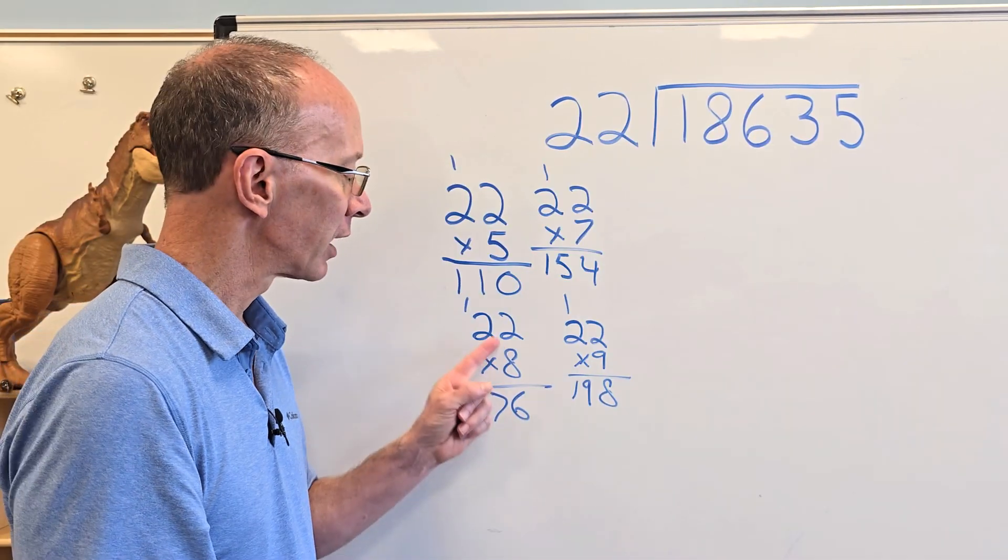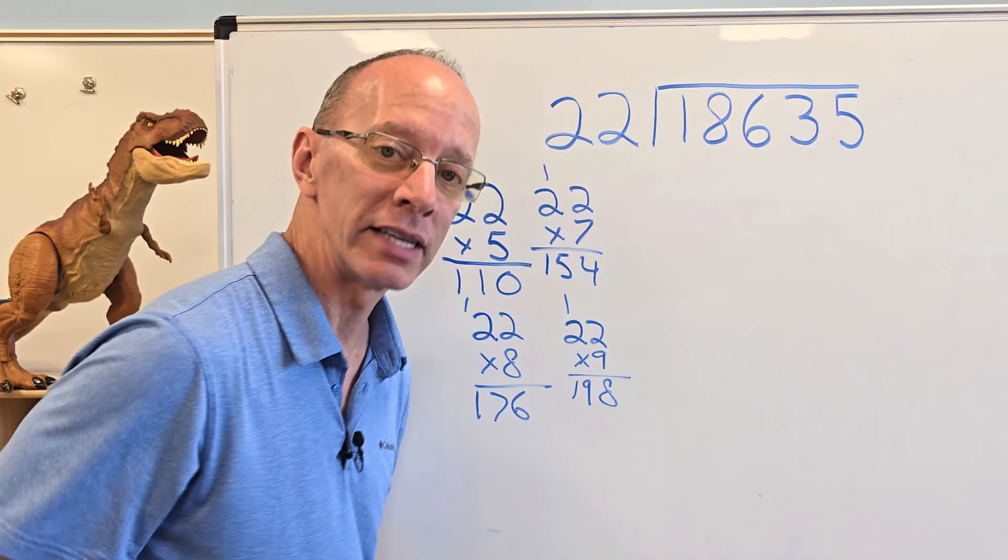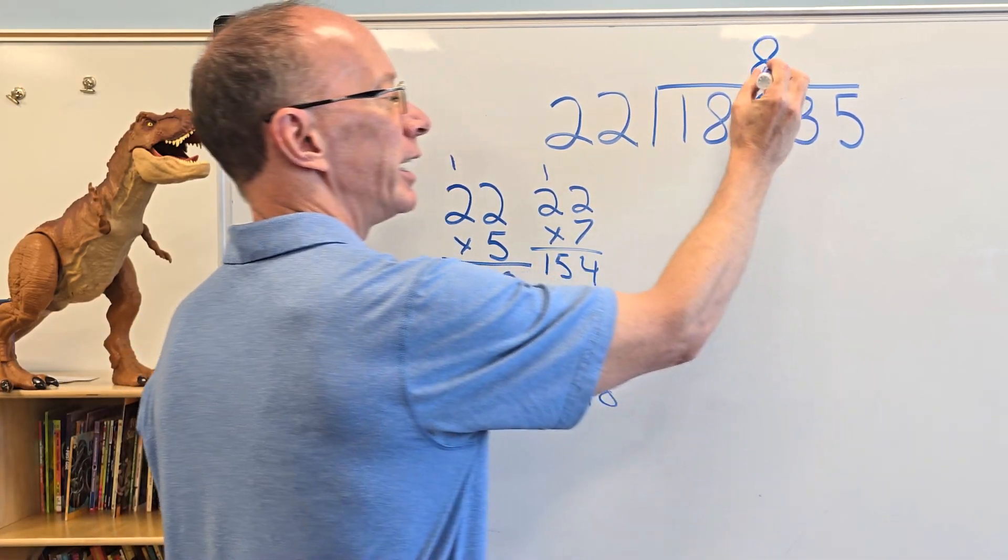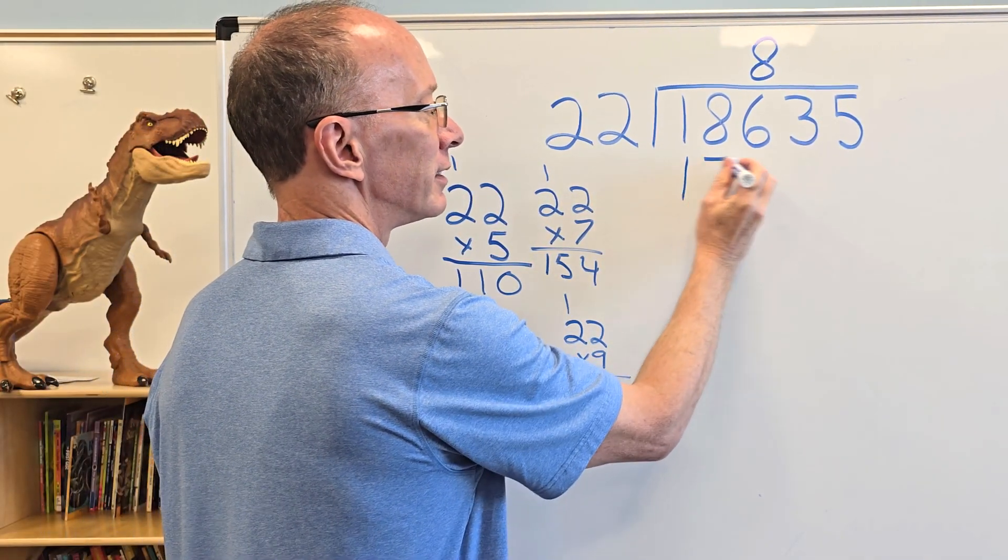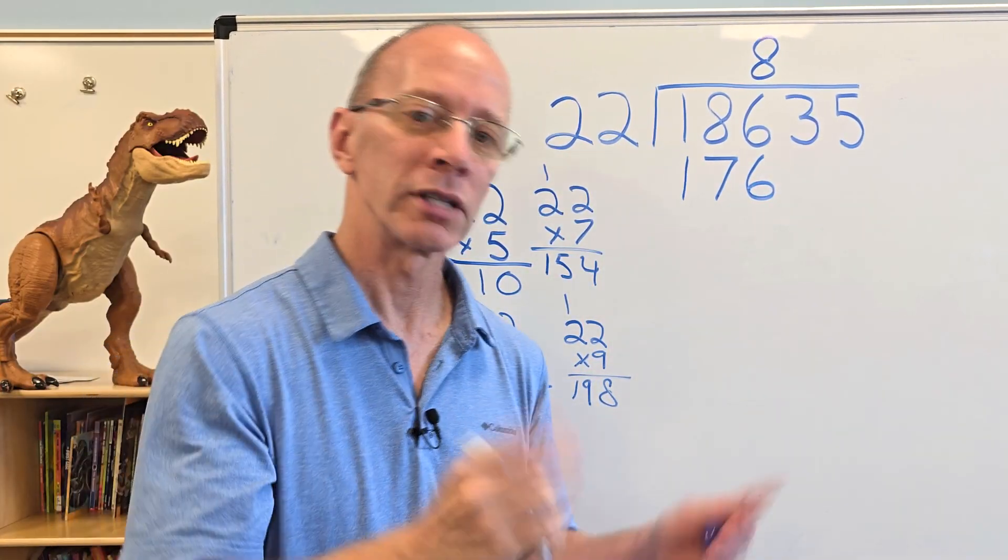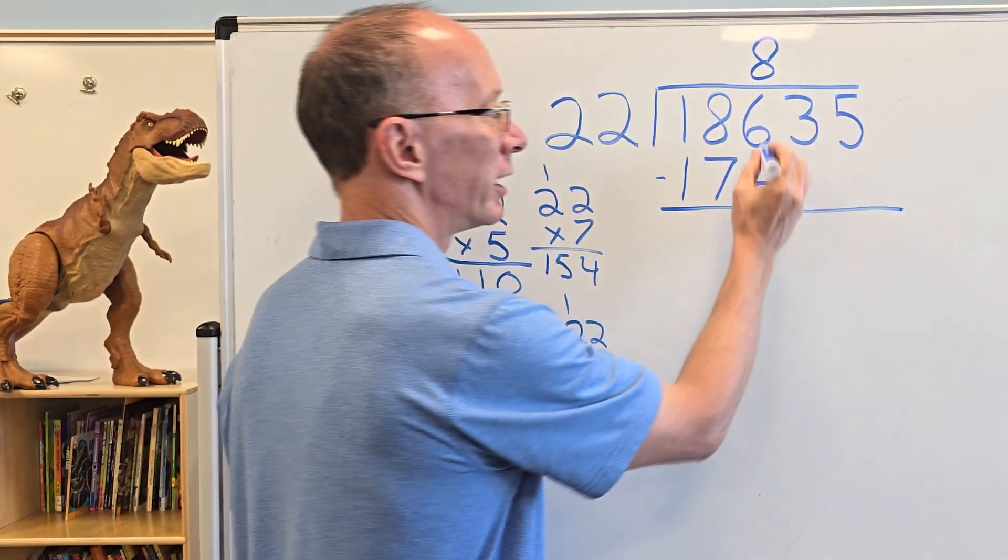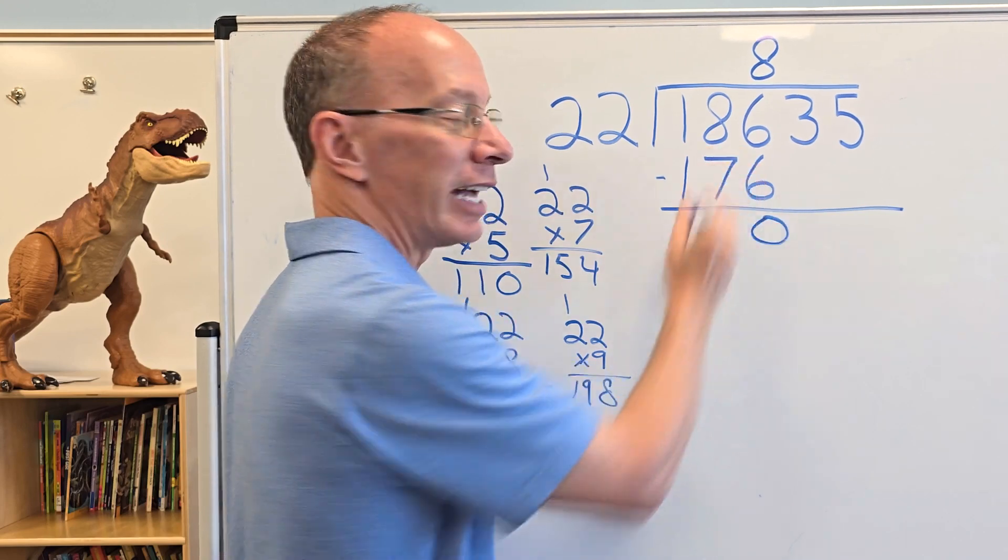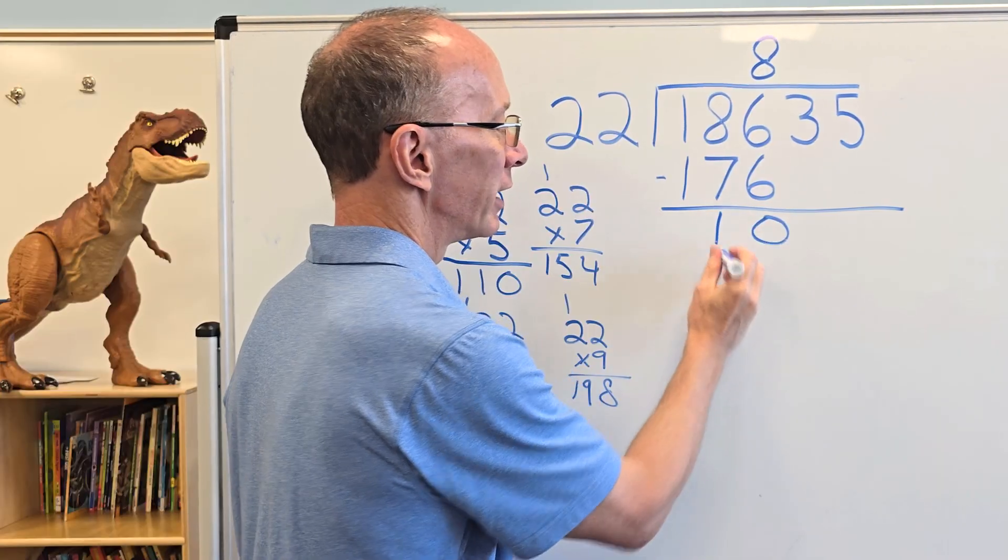So that would be 176. I take this 8 right here, and I'm going to put it right here above that 6. So let's go ahead and do that. Put that 8 right there. 8 times 22 is 176. I write 176 right here. And now my next step is to subtract. Yeah, subtract. So I'm going to go ahead and subtract this number here. 6 minus 6 is 0, and 8 minus 7 is uno, 1. So I put 1 right there.